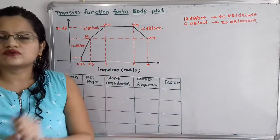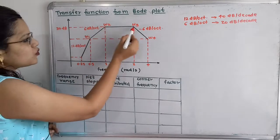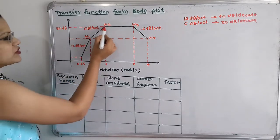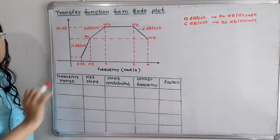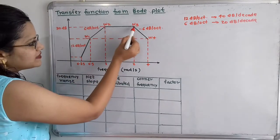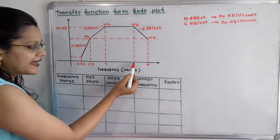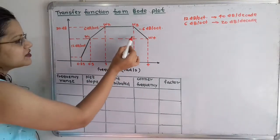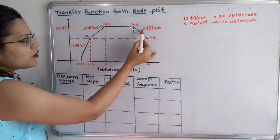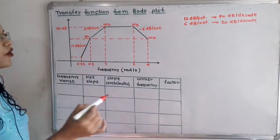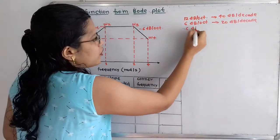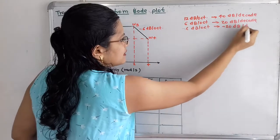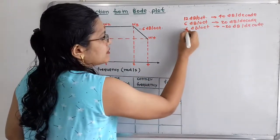From omega 2 to omega 3, there is no slope because of this horizontal line, and the magnitude shown is 30 dB. Then from omega 3 to omega 4, frequency is getting doubled from 2 rad/s to 4 rad/s, so this range is again an octave. The slope is minus 6 dB per octave, which we will say is minus 20 dB per decade.